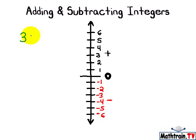So let's say I had 3 plus 2. 3 plus 2 means we start at 3. We add 2, 2 positives, 1, 2, and of course the answer is 5.